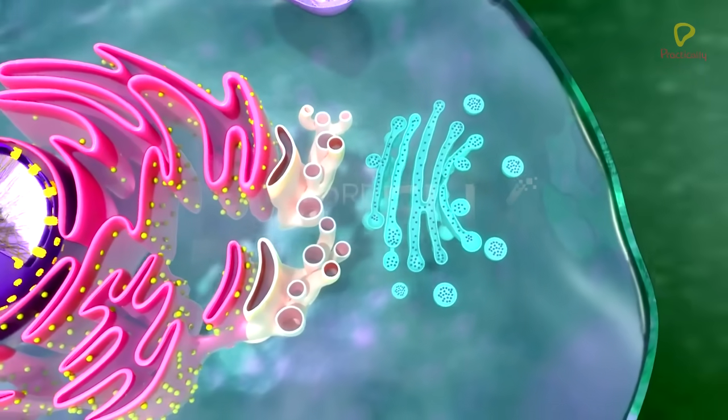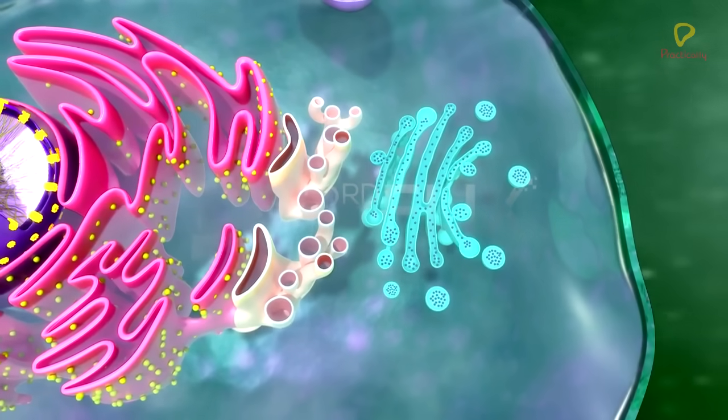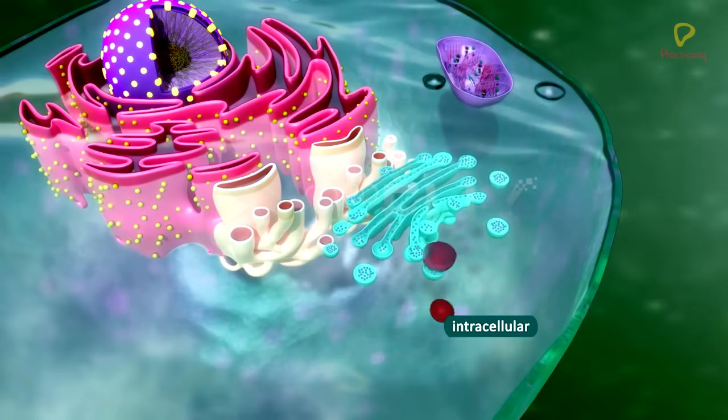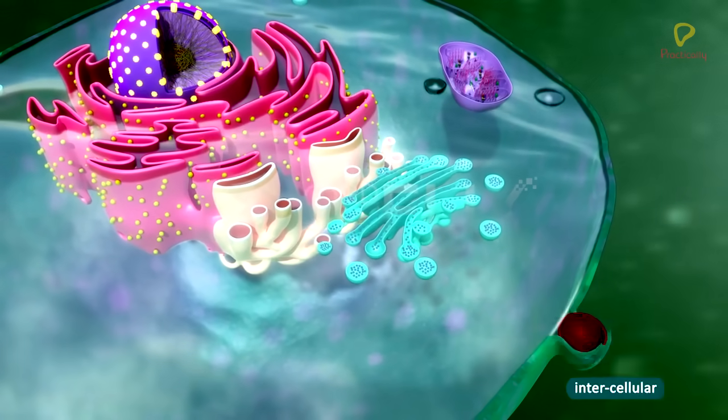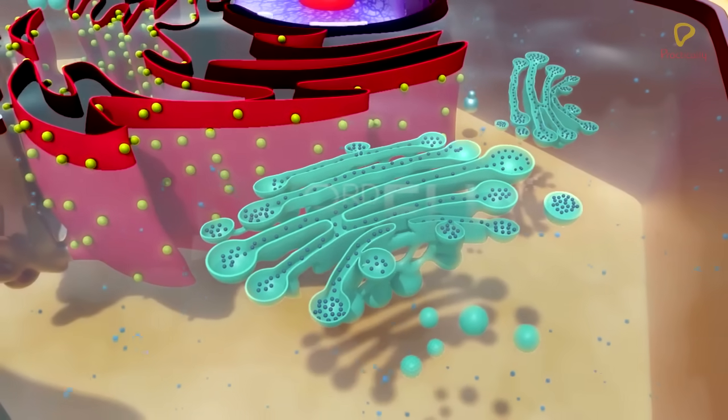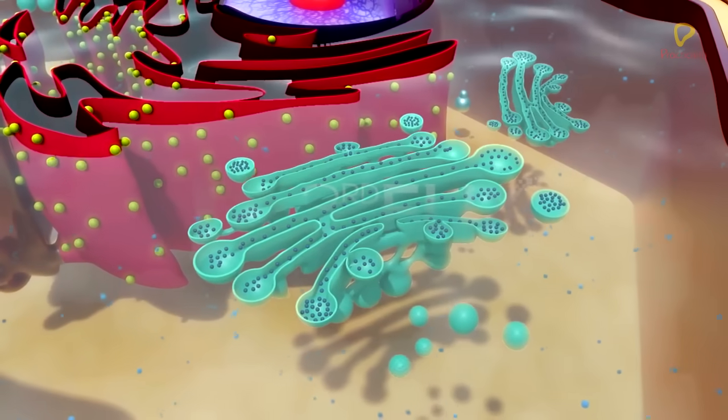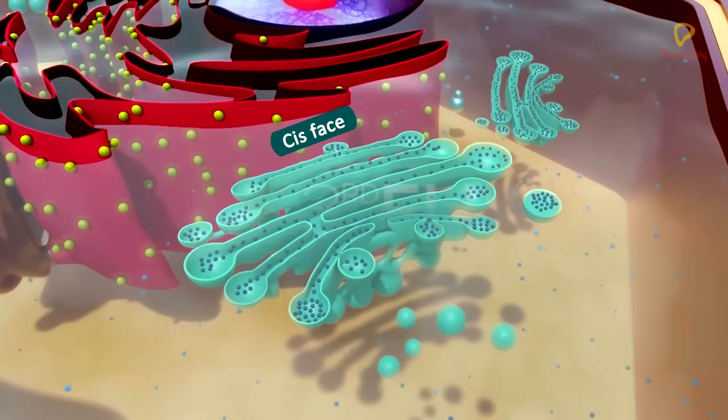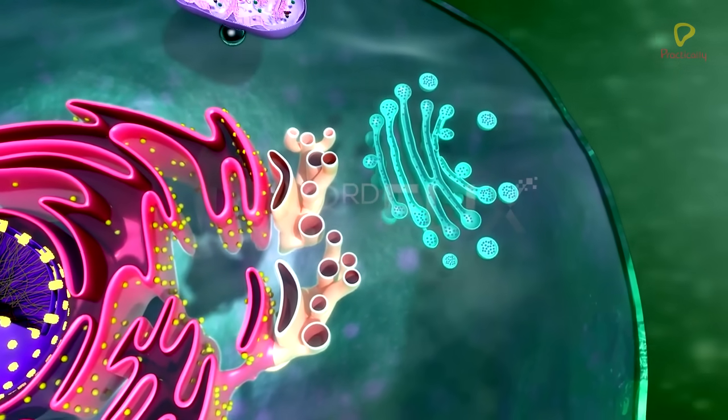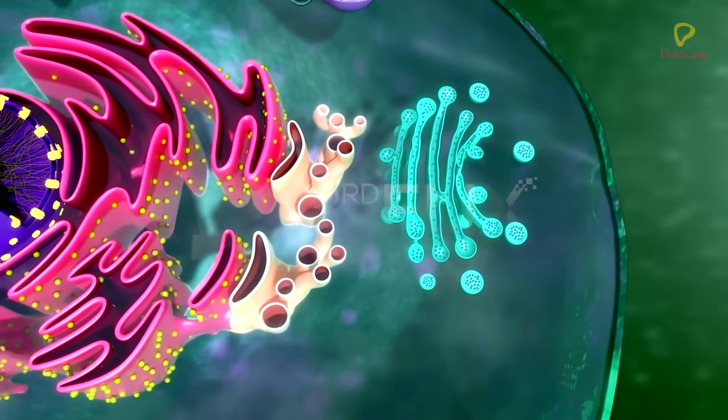The Golgi apparatus principally performs the function of packaging materials. These are to be delivered either to intracellular targets or secreted outside the cell. The materials to be packaged in the form of vesicles from the endoplasmic reticulum fuse with the cis-face of Golgi apparatus and move towards the trans-face. This explains why the Golgi apparatus remains in close association with the endoplasmic reticulum.